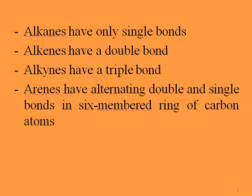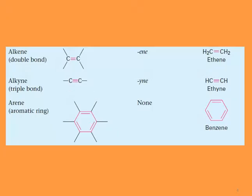Let's have a quick review. We have alkanes, which have only carbon-carbon single bonds. We have alkenes, which have carbon-carbon double bonds. We have alkynes, which have carbon-carbon triple bonds. And we have arenes, which have alternating double and single bonds in a six-membered ring of carbon atoms — those are aromatic compounds.